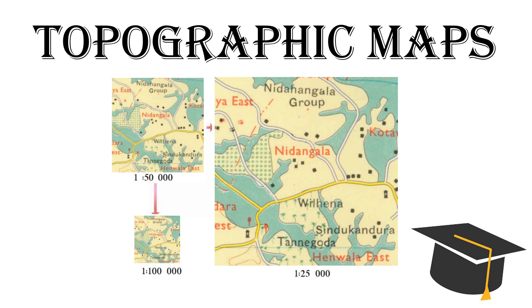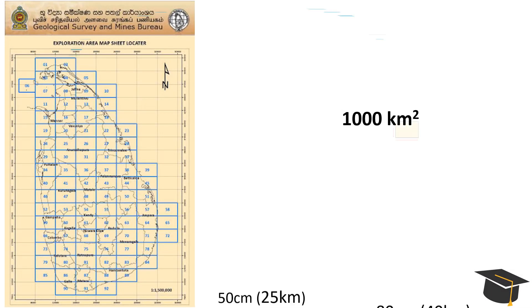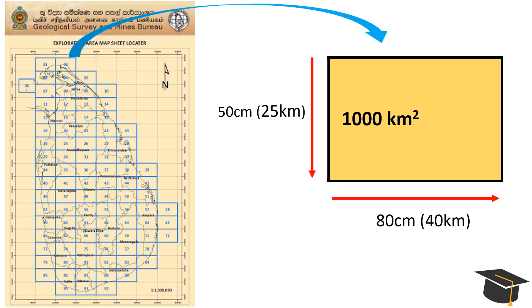When considering topographic maps in Sri Lanka, there are main two series of maps. First complete topography map series for the country was 1 inch to 1 mile map series. After 1970s, government of Sri Lanka decided to adopt the metric system. As a result, new map series was prepared: the 1 to 50,000 series of maps.